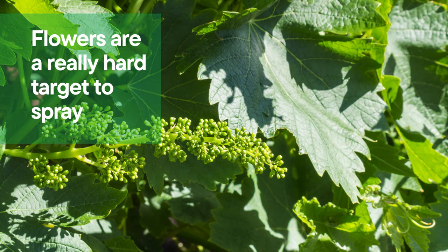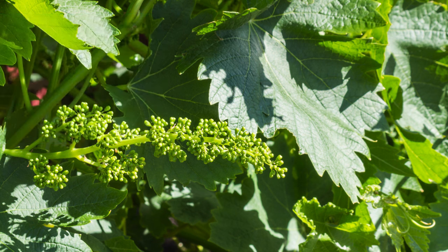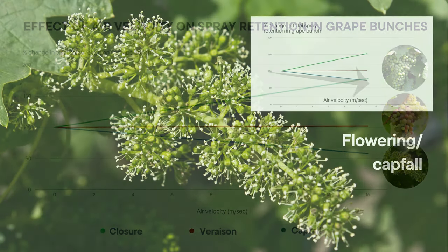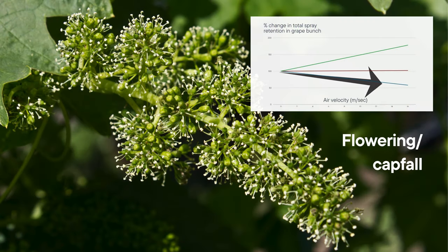Flowers are a really hard target to spray. This is data that came out of work done by Agriculture Victoria and Food Science Australia in a wind tunnel at Werribee. They hung these little bunches at different growth stages in the wind tunnel and sprayed them with different air speeds. At flowering, as your air sped up from no metres a second — so very very slow air, basically just dropping the droplets onto the bunch...